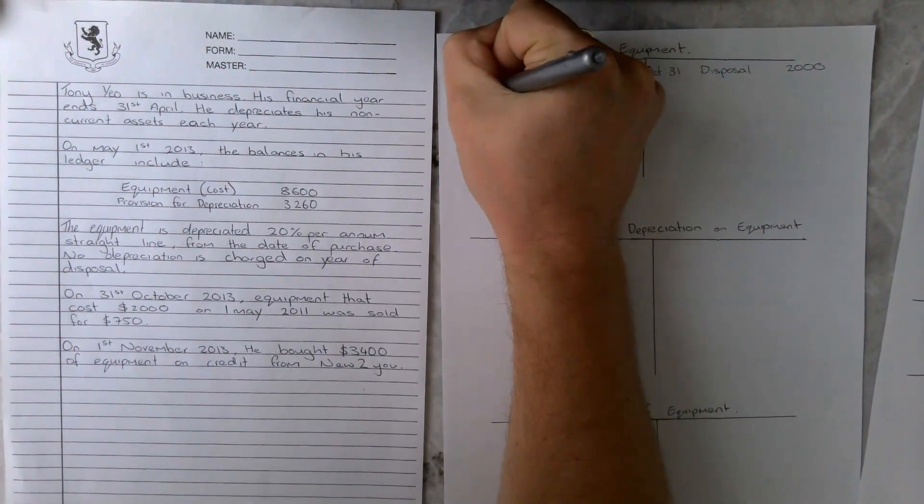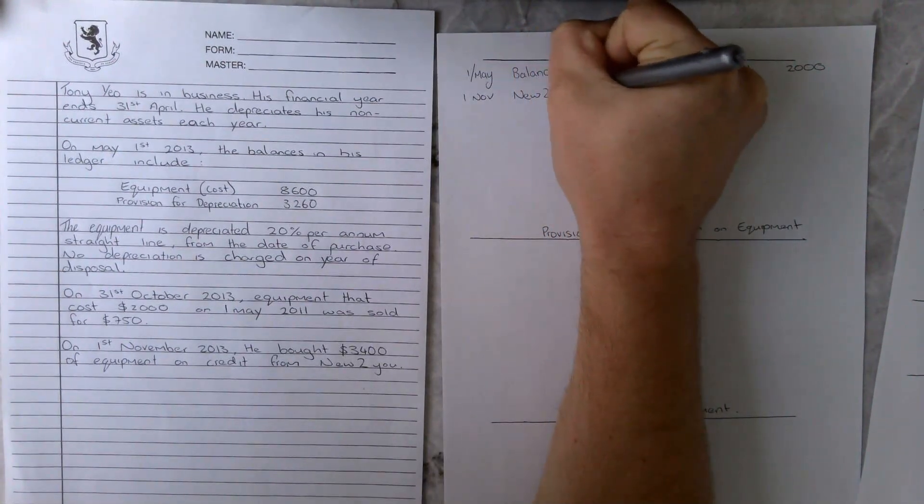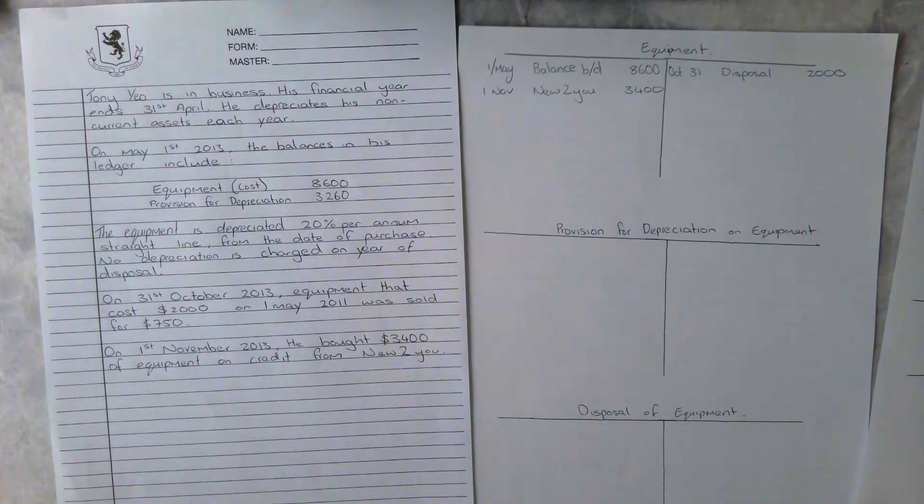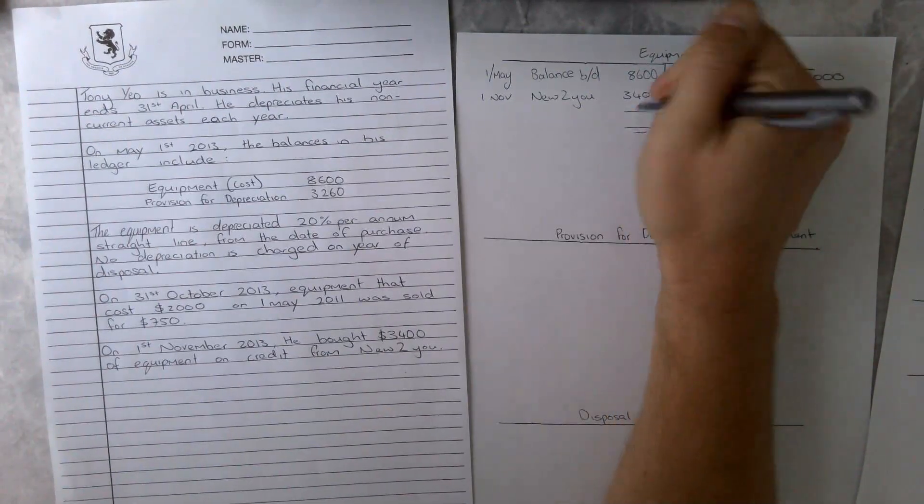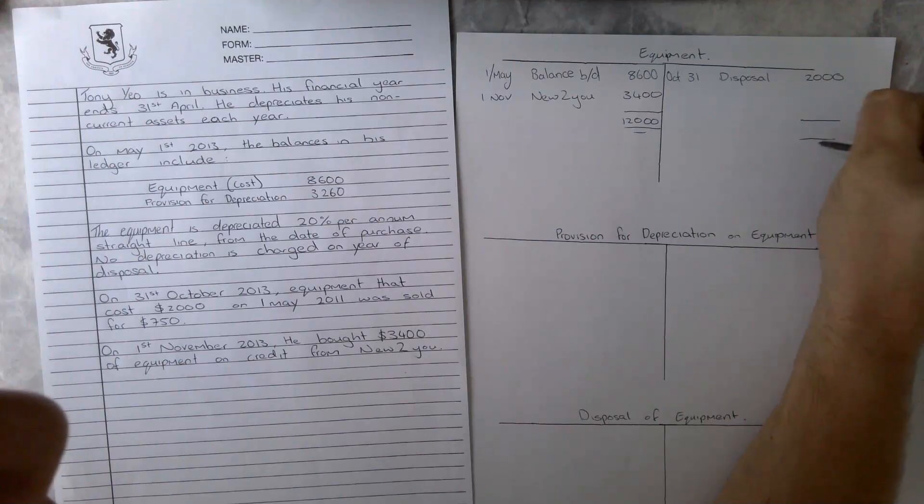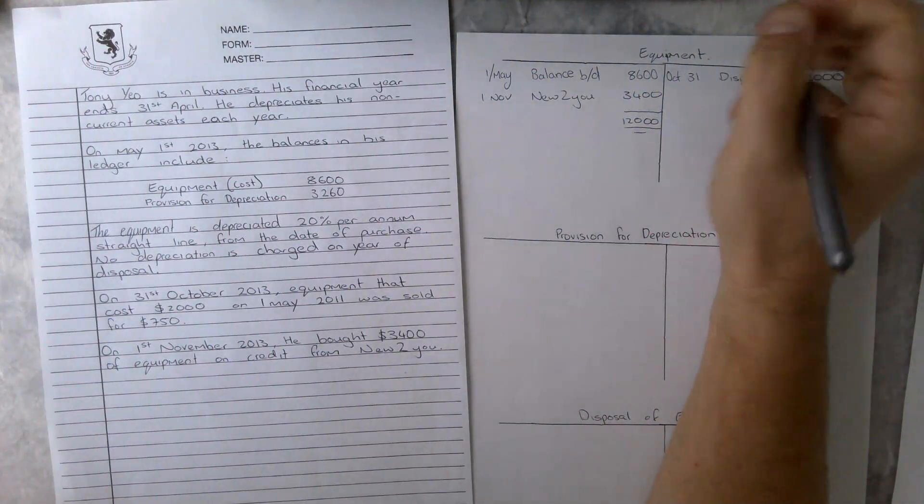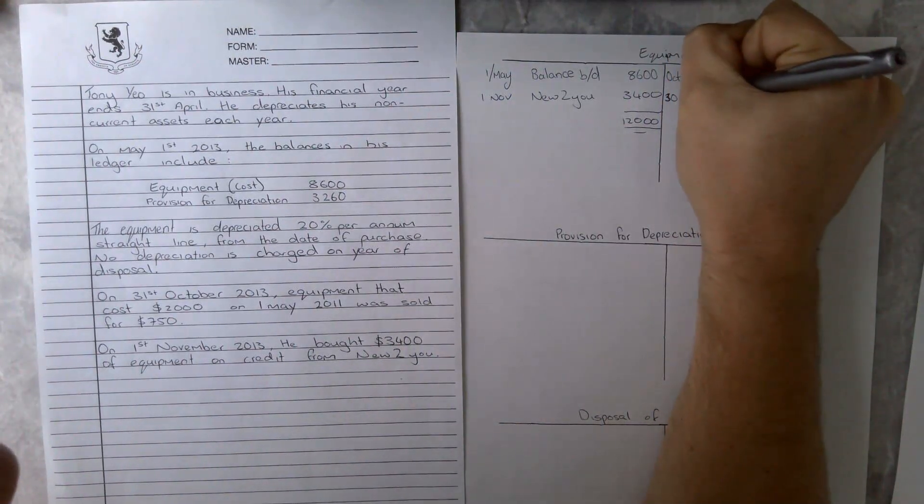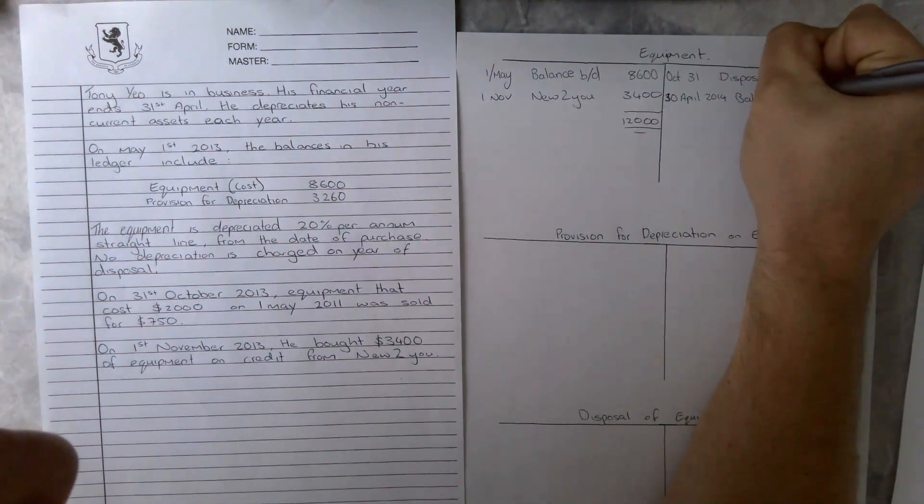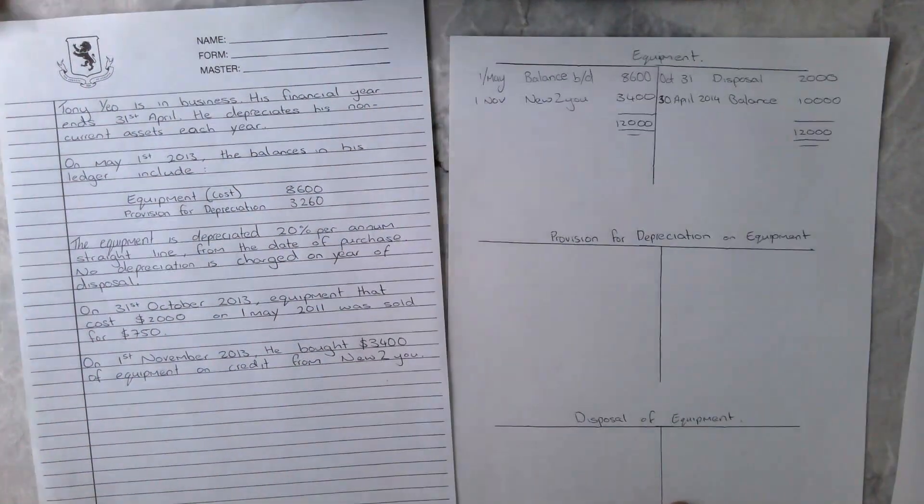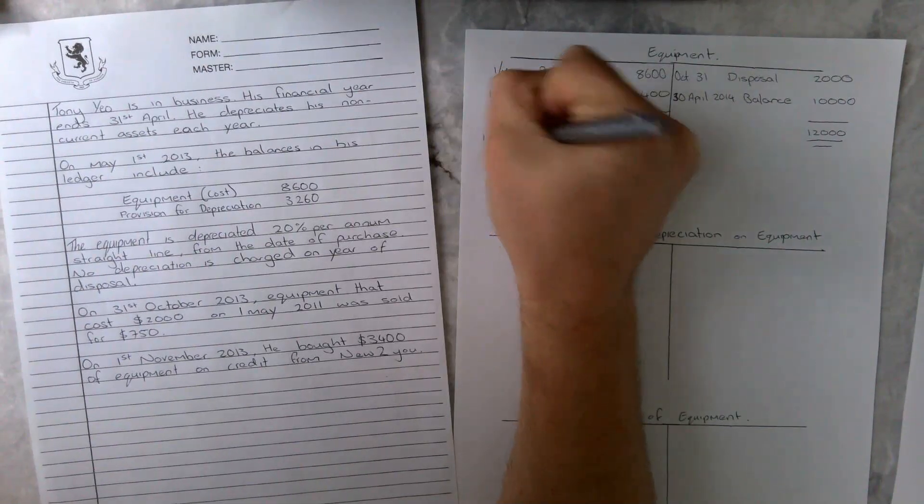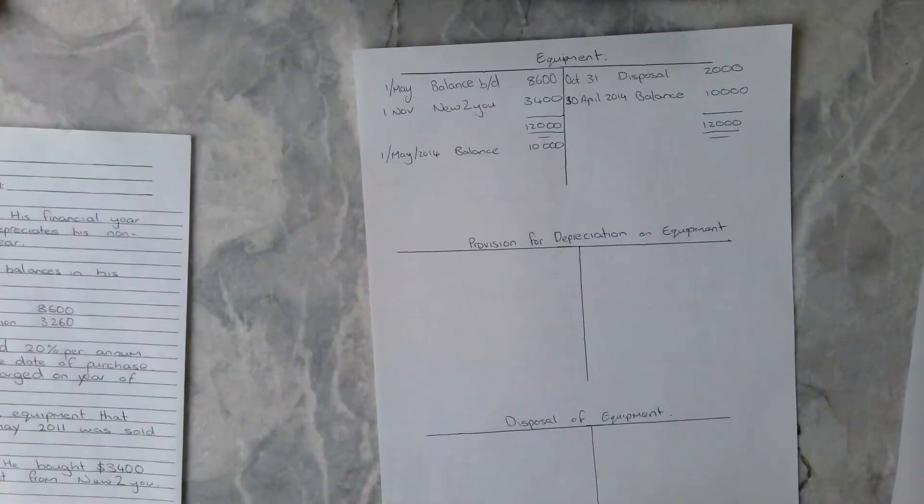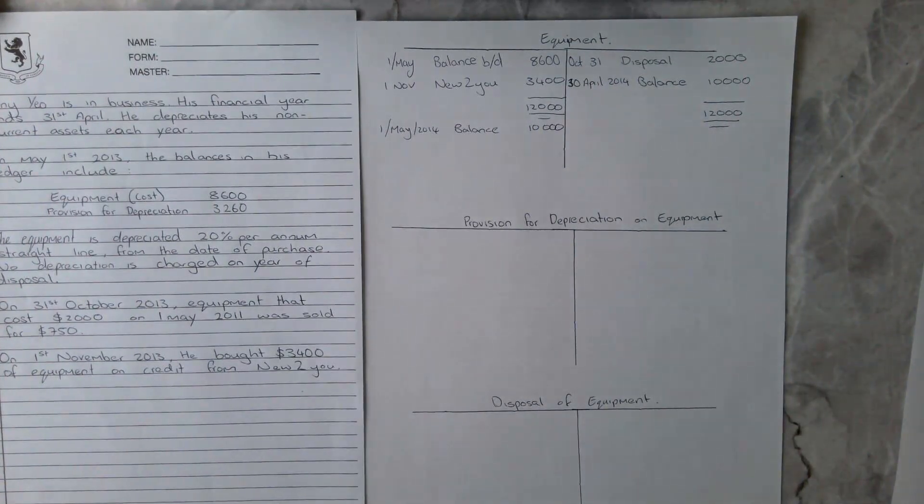What we are then going to do is on the 1st of November, we are going to bring in new equipment. Because remember, it is a credit sale, so we need to put into the account that it's coming from at $3,400. We can obviously tell that the left-hand side is bigger, so we're going to close that off at $12,000. Just be really careful of our dates, because this is actually the 30th of April. I would always write 2014 so I know it's next year. The balance is $10,000, and then obviously we are going to go 1st of May 2014, balance $10,000. So that is account one completed.